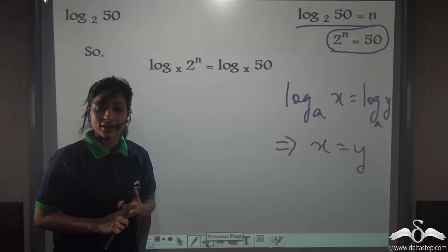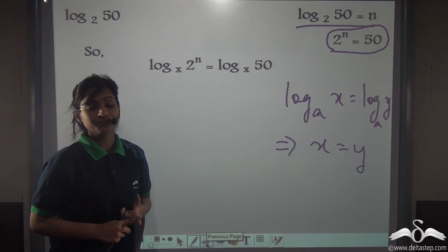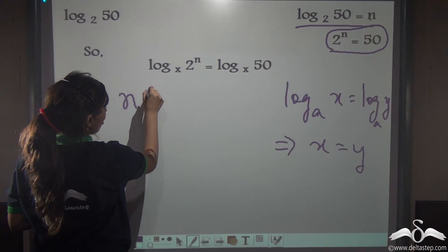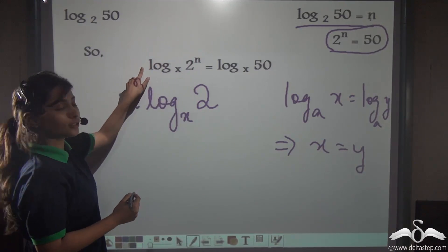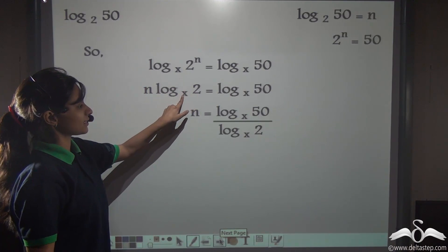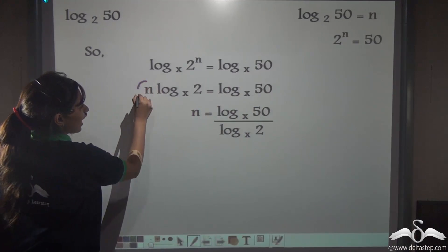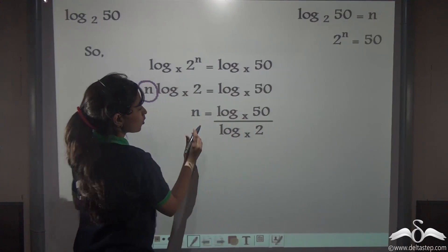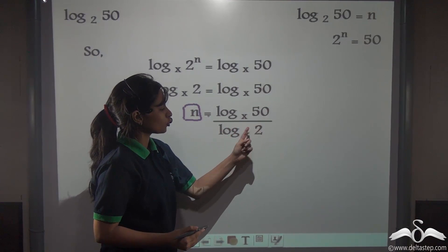Now do you remember the power law that we had studied in the previous lectures? That was amongst the three laws of logarithm. Using the power law, we can write this as n log 2 to the base x. So what we get is n log 2 to the base x is equal to log 50 to the base x. Now making n the subject of this equation, we take log 2 to the base x to that side. So n is equal to log 50 to the base x by log 2 to the base x.